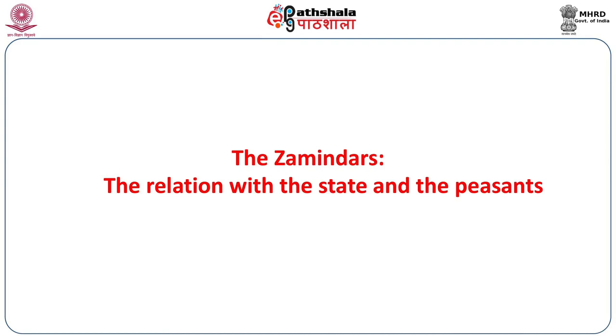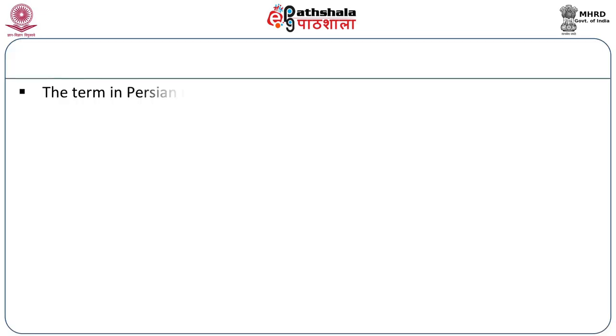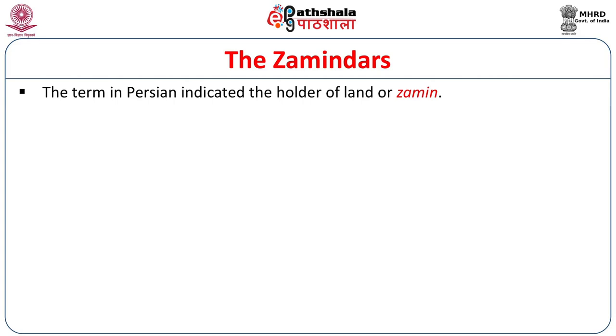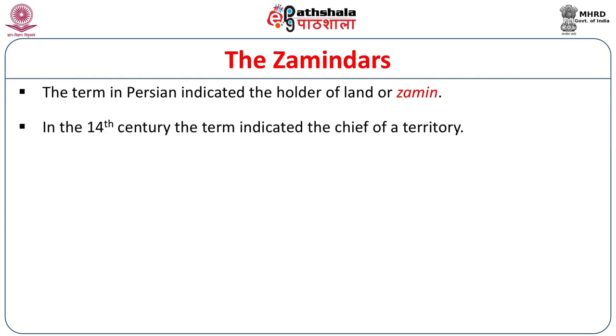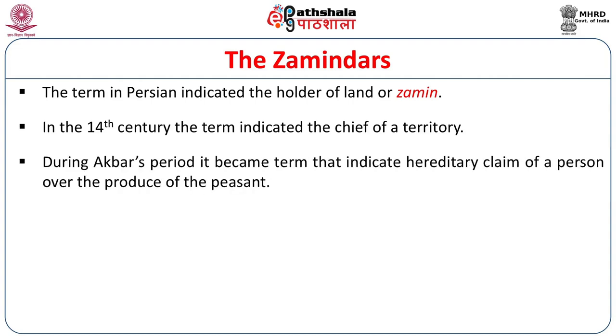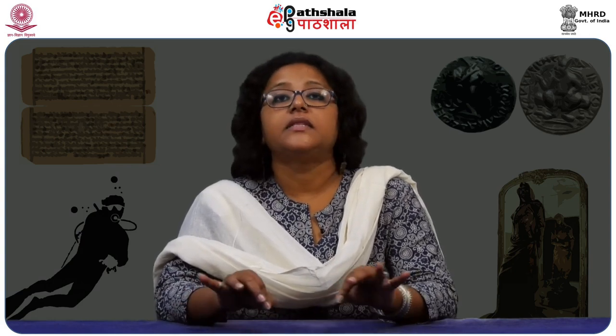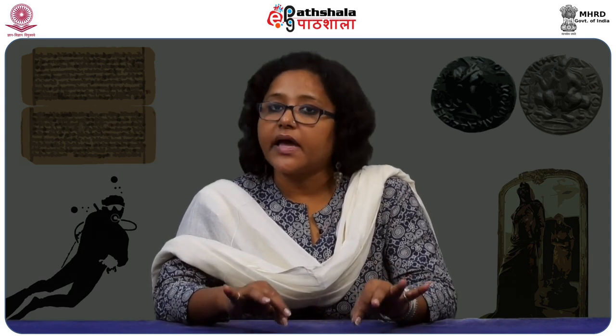Let us move to another group of landholders or land right holders — the zamindars. The zamindar as a term became popular from the Mughal time and became a kind of umbrella term for all the earlier rural leaders or stakeholders in the rural area. The term is Persian, indicating the holder of a land or zameen. In the 14th century, the term indicated the chief of a territory. During Akbar's period, it became a term indicating a hereditary claim over the produce of the peasants. This is the basic difference between a jagirdar and a zamindar — the jagirdar was not a hereditary post while the zamindar had a hereditary claim.